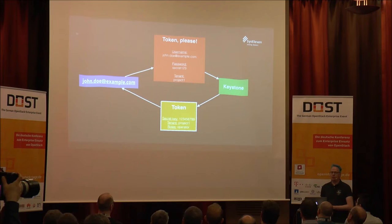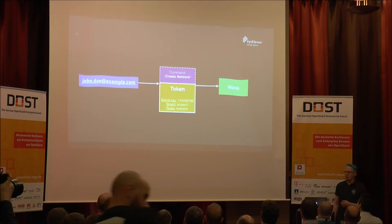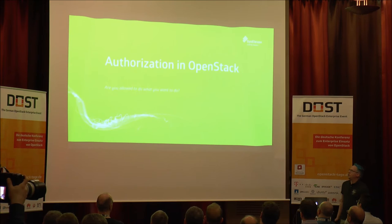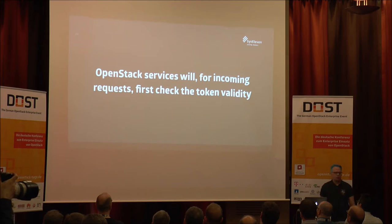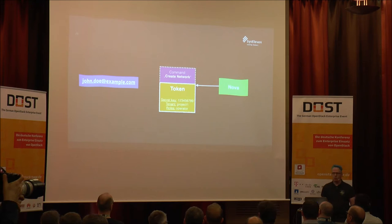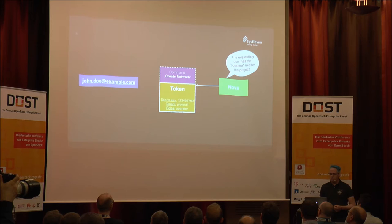You can use that token to authenticate yourself against a service. For example, if you want to create a network from Nova, you send that token with your create network request. We already know that you are the person that you claim you are because you have the password. So we need to authorize you — check whether the token is valid and whether it actually allows you to do what you want to do. Either you go back to Keystone and ask if the token is valid, or if you use Fernet tokens, the checksum is calculated locally. In the end the token will be valid, you have the right role, Nova gives you your created instance, and everybody is happy.